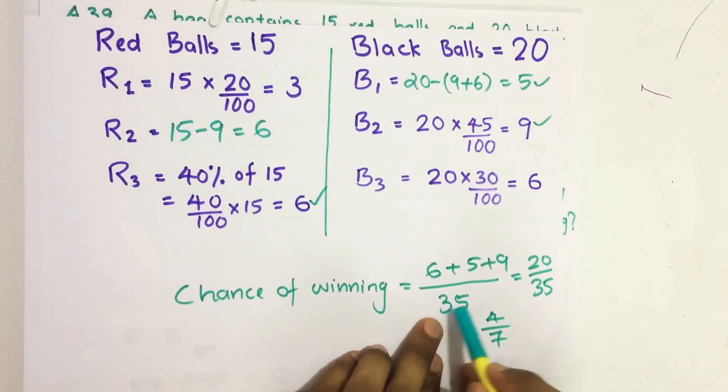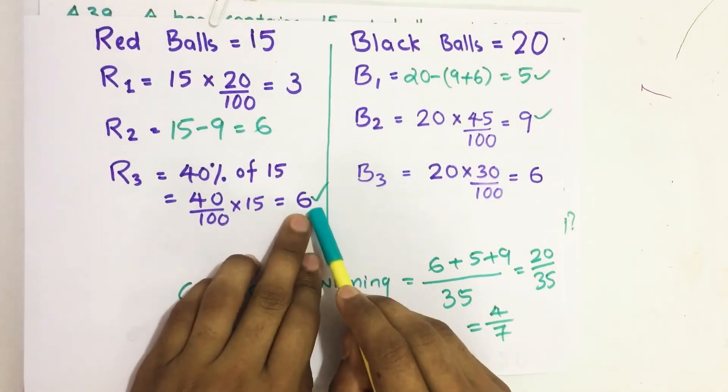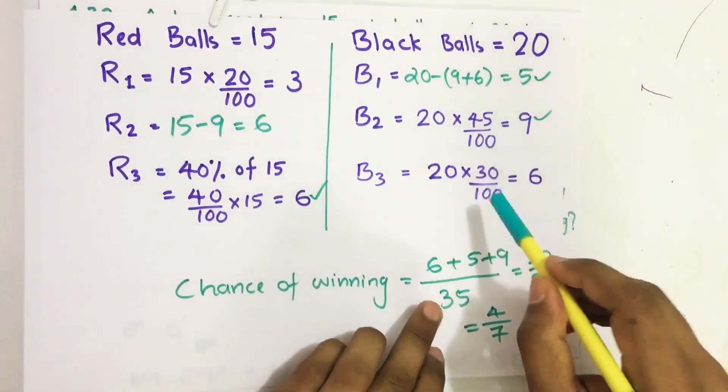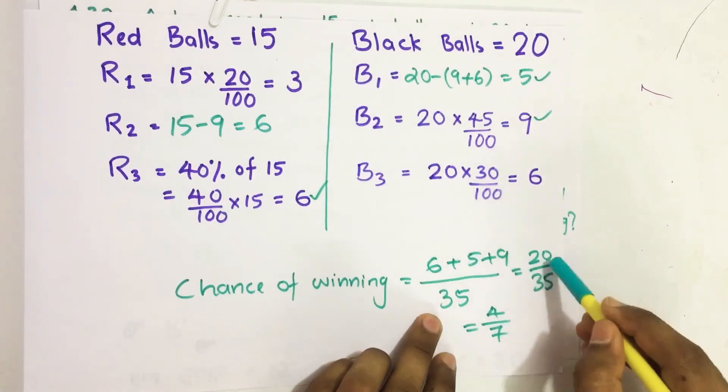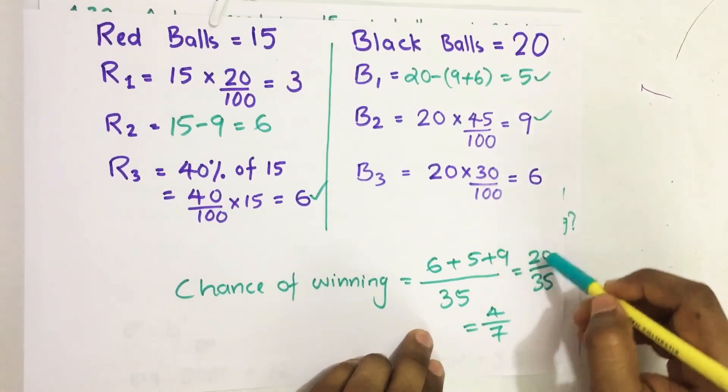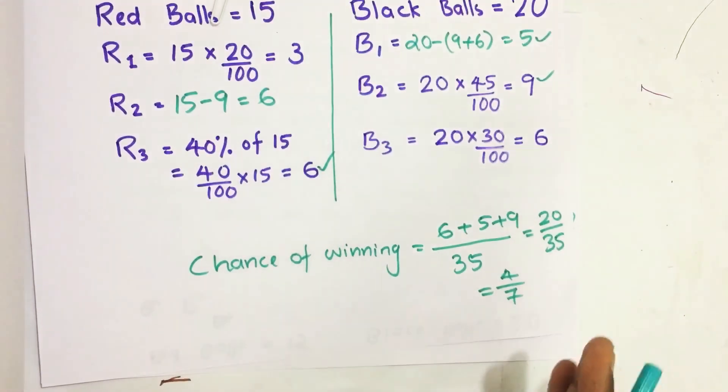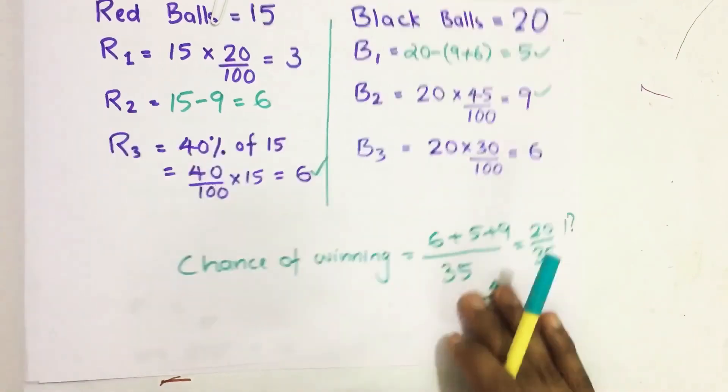So, here total 35 balls are there in the bag. If he is choosing this 6 plus this 5 plus this 9, any of these 3 kinds of balls, he will win. So, total number of winning balls equals 20. Out of this 35, if he is picking any of these 20 balls, he will win. Therefore, the probability or chance of winning equals 20 by 35, which is equal to 4 by 7.